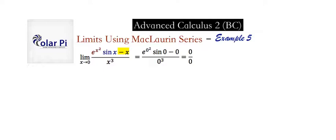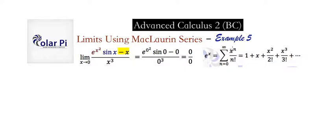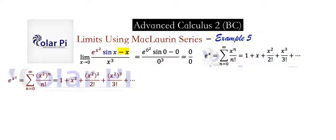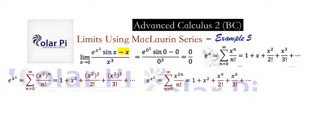I already have five videos on how to derive the Maclaurin series for the five most important functions: e to the x, sine, cosine, arctan, and ln of one plus x. To find the Maclaurin series for e to the x squared, start with the Maclaurin series for e to the x. E to the x has one of the nicest Maclaurin series. To get the Maclaurin series for e to the x squared, all we do is replace x with x squared — meaning we replace all the x's in this infinite polynomial with x squared. Now x squared to the n is x to the 2n, and x squared squared can be written as x to the fourth, and so on. We can write the Maclaurin series for e to the x squared like this.